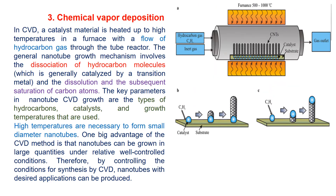The third method is chemical vapor deposition. A hydrocarbon gas is introduced into the reaction chamber, where it is dissociated into carbon, which then grows into carbon nanotubes at the surface of a catalyst. A catalyst material is heated to high temperature in the furnace with a flow of hydrocarbon gas through the tube reactor.